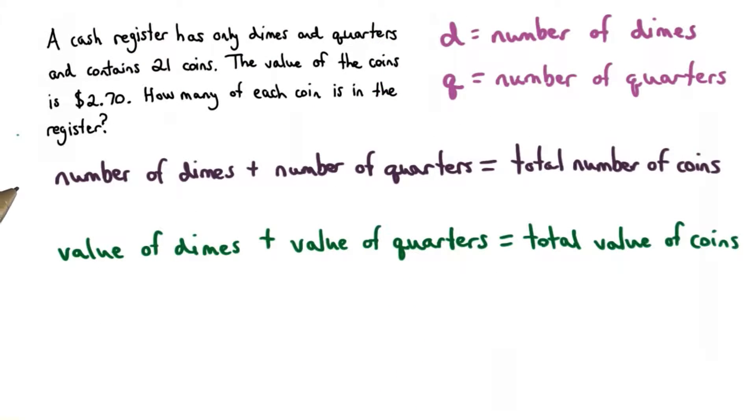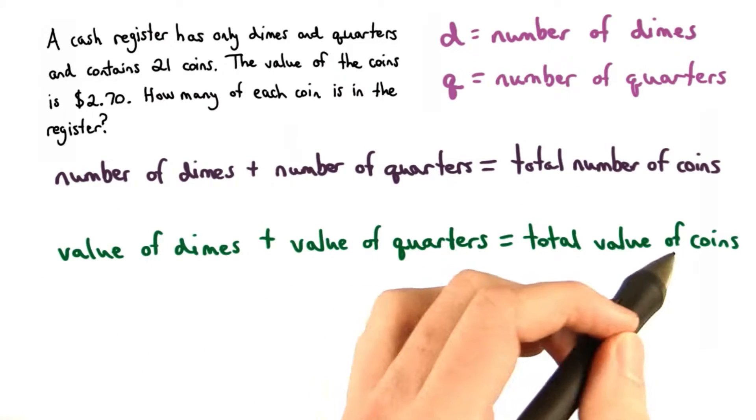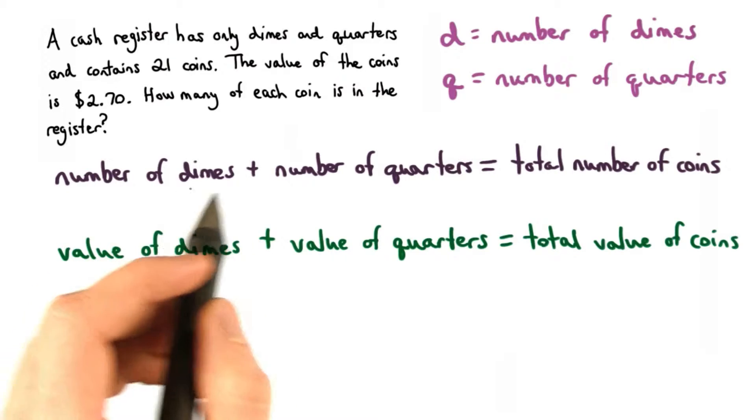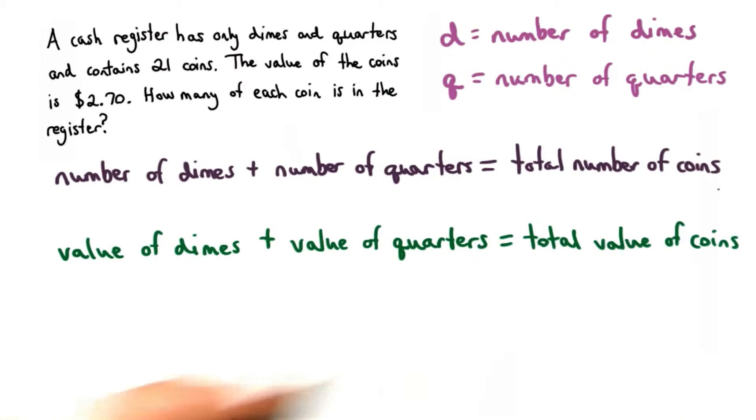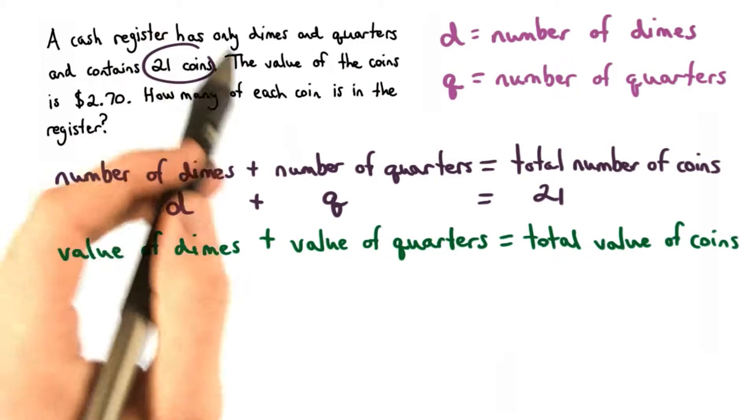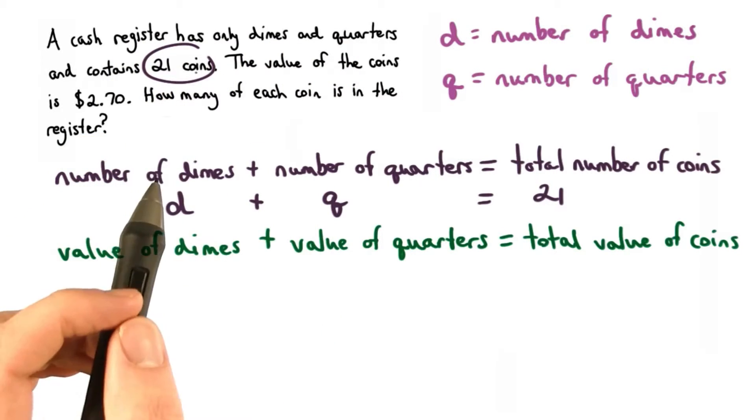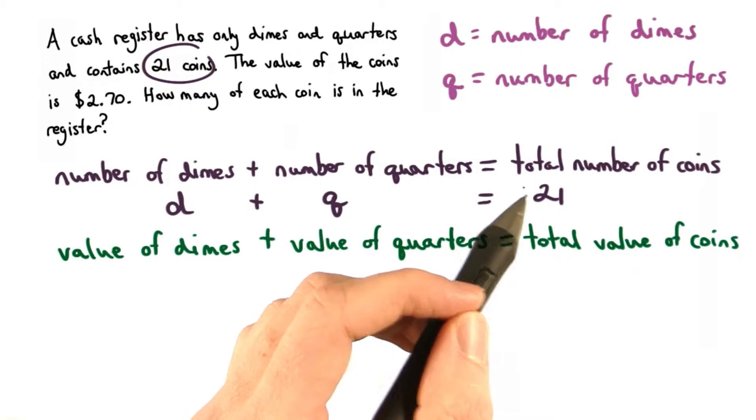We need to set up two equations. One will involve the number of coins, and the other will involve the value of the coins. We know the number of dimes plus the number of quarters has to equal our total number of coins. Our register only contains dimes and quarters and has a total number of 21 coins. So if we add the number of dimes, d, to the number of quarters, q, we get 21.